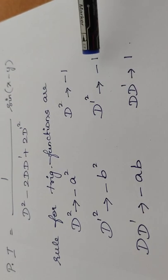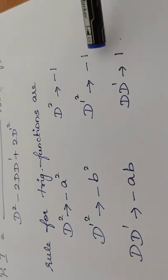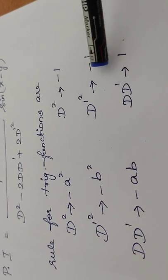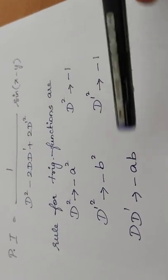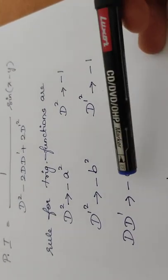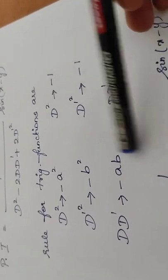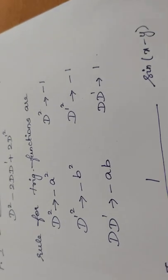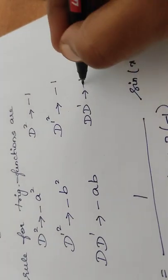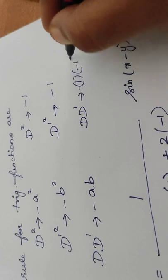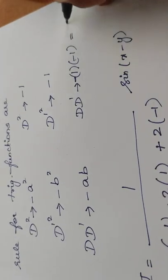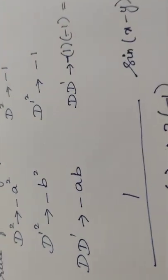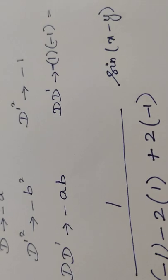So b² = (−1)² = 1, and we apply the negative sign as per the rule giving −1. For DD', we use −ab: a = 1 and b = −1, giving −(1)(−1) = +1. So DD' carries the value +1.